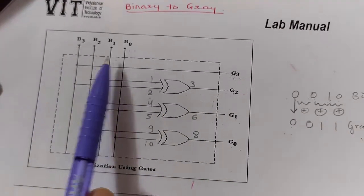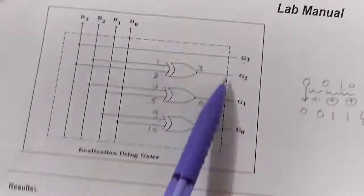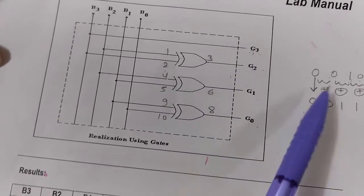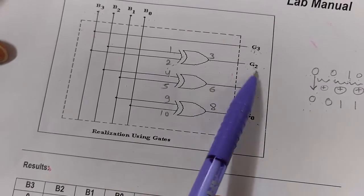Next we connect B3 to pin number 2 and B2 to pin number 1, and take output from pin number 3 of the XOR gate. This is our G2. The first two inputs are XORed and we get the second digit of the grey code.